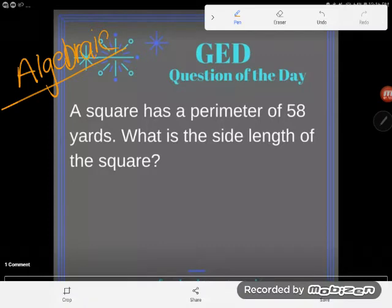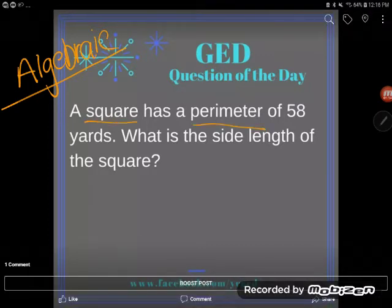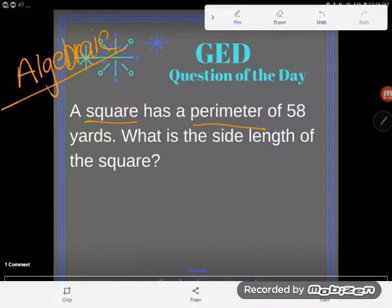So what I see is I have a square and I know its perimeter, and so what I'm gonna start with is the perimeter of a square formula. If you don't know it, it's on your formula sheet, so let's go take a look at that.